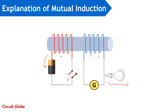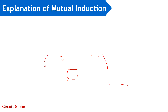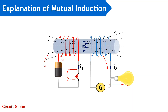In the open switch condition, as shown here, no current flows through this particular coil, and so mutual induction will not take place in this scenario. Due to this reason, the bulb connected with this particular coil will remain OFF. Now let's move further and understand the next case scenario where the switch gets closed and the bulb starts glowing. The closing of this switch and glowing of this bulb depends on the phenomenon of mutual induction.